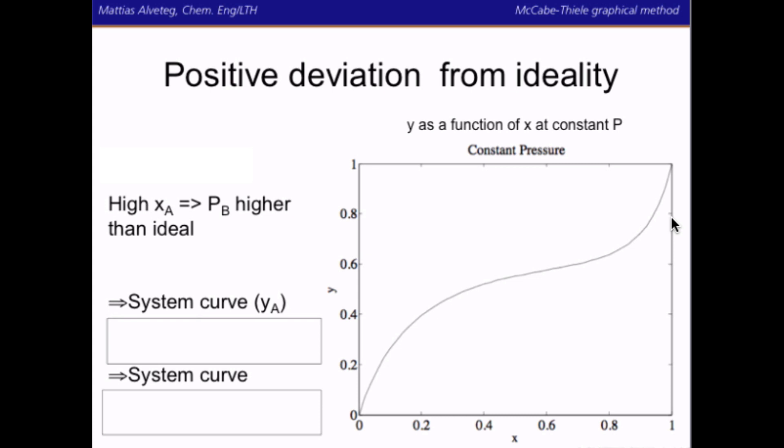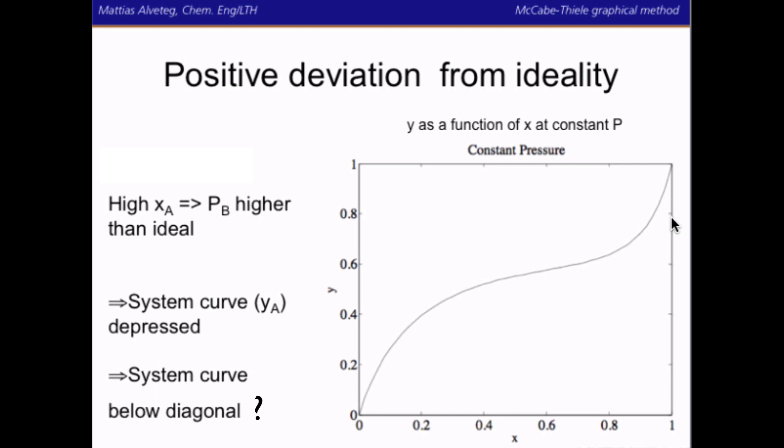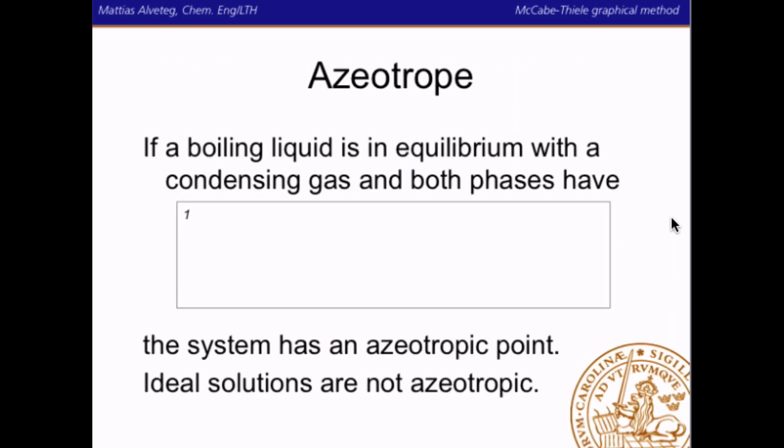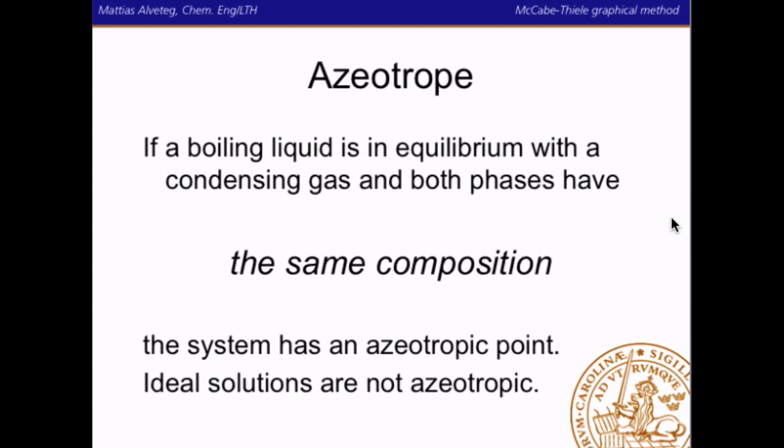So what will the system curve look like? The system curve will be depressed at high XA — at high molar fractions of A — and it might even go below the diagonal at high molar fractions of A. If it goes below the diagonal, we will have an azeotropic point at the place where the system curve crosses the diagonal. An azeotrope occurs when a boiling liquid is in equilibrium with a condensing gas and both phases have the same composition.